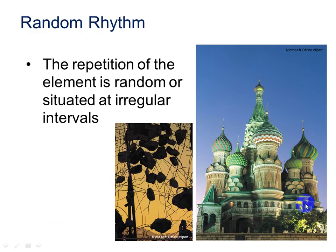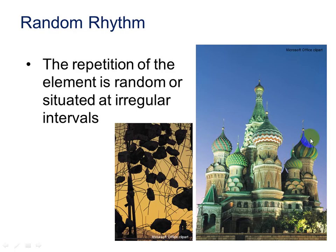Random rhythm is the repetition of an element at random or irregular intervals. We can see that here with these broken pieces of concrete caught in reinforcing steel — it's random rhythm because there doesn't appear to be a pattern, but it still shows rhythm because it's still concrete and steel. The repeated use of the onion domes on St. Basil's Cathedral creates a random rhythm in the design, as even though they've used different colors and heights, the onion domes unify the architecture.